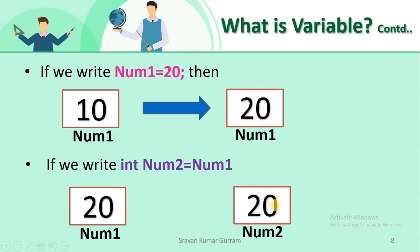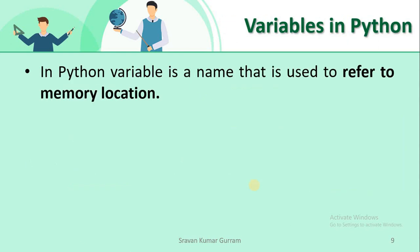Now let us understand how variables work in Python. A Python variable is a name used to refer to a memory location — not to store a value directly. In C, C++, and Java, a variable stores the value, but in Python, the variable gives a reference to the memory location where the actual value is stored. That is the major difference.